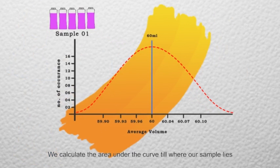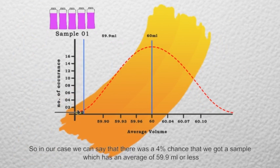We calculate the area under the curve till where our sample lies. So in our case, we can say that there was a 4% chance that we got a sample which has an average of 59.9 ml or less.